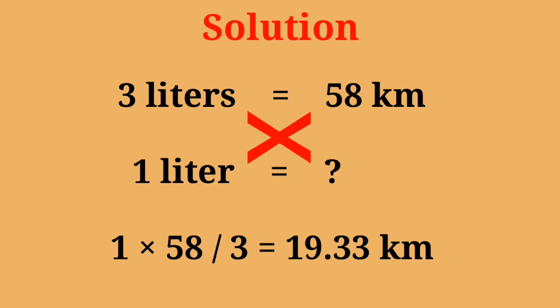Then how much km in 1 litre? 1 times 58 divided by 3 is equal to 19.33 km.